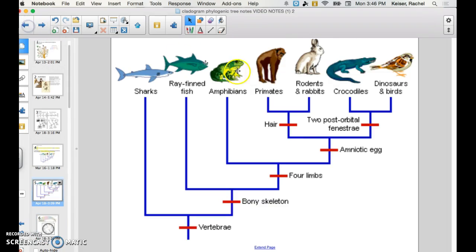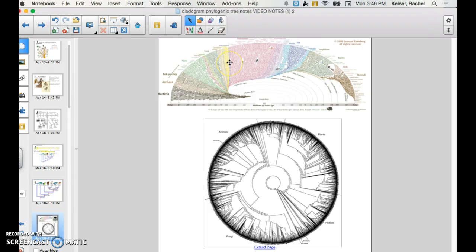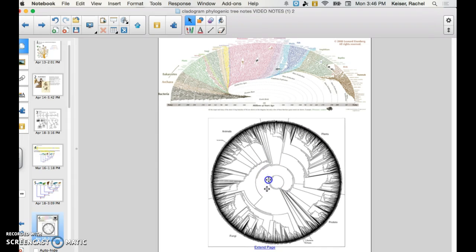So this is a more simplified cladogram, but cladograms can include many different traits, many different species. And you can have a very complex cladogram like this one or this one down here.